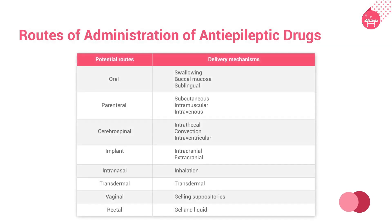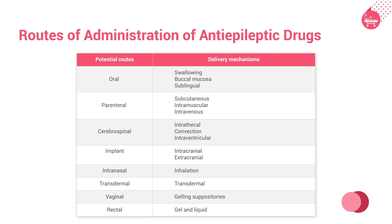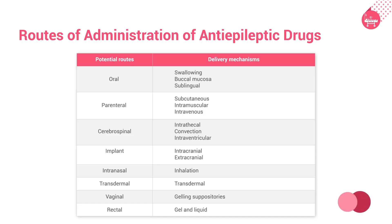Let us look at routes of administration of anti-epileptic drugs. The potential routes include: oral (swallowing); buccal mucosa and sublingual; parenteral (subcutaneous, intramuscular, and intravenous); cerebrospinal (intrathecal, convection, and intraventricular); implant (intracranial and extracranial); intranasal inhalation; transdermal; vaginal (gelling suppositories); and rectal (gel and liquid).